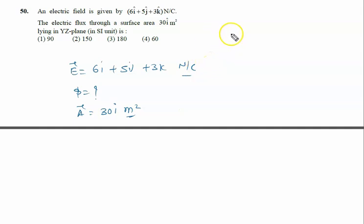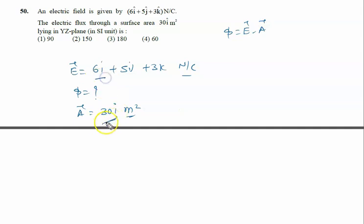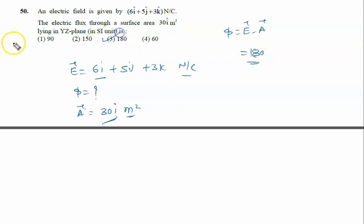We require phi equal to E dot A. Since the area vector is only in the i-cap direction, only the i-component of the electric field is responsible. So 6 into 30 equals 180. The right answer is option 3, that is 180.